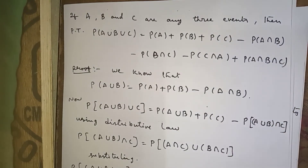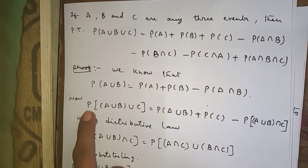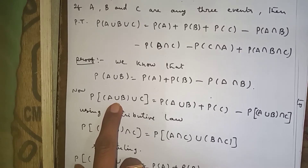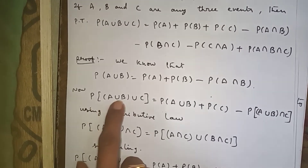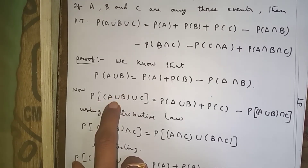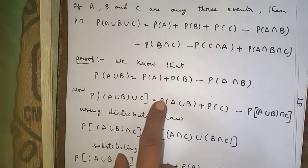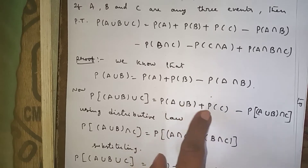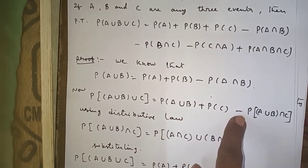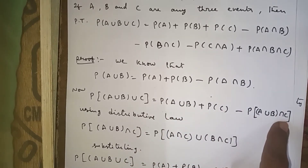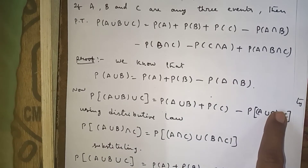We know that by the addition theorem, P(A ∪ B) = P(A) + P(B) − P(A ∩ B). Now, treating A ∪ B as one term, P(A ∪ B ∪ C) = P(A ∪ B) + P(C) − P((A ∪ B) ∩ C), using the addition theorem.